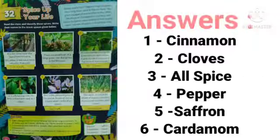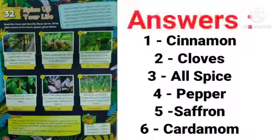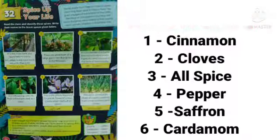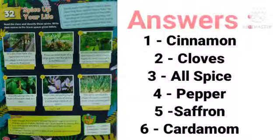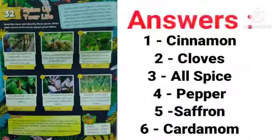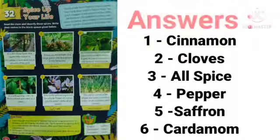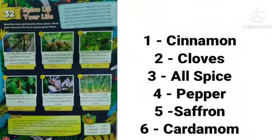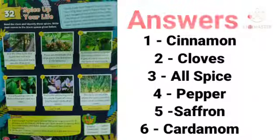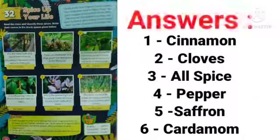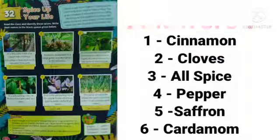Chapter 32: Spice Up Your Life. Read the clues and identify these spices, writing their names in the blank spaces given below. The first one is cinnamon, the second one is cloves, the third one is allspice, the fourth one is pepper, and the fifth one is saffron.